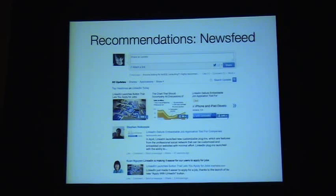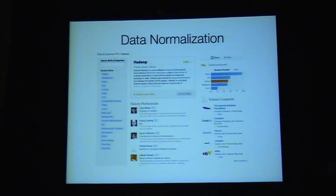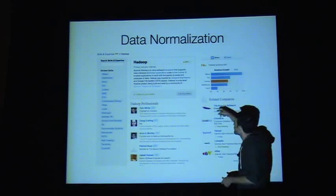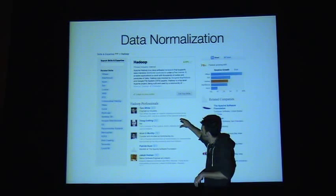Newsfeed — what are the interesting things happening in your space? And data normalization: this is a page about the skill Hadoop. We've done this process — which is very hard for a lot of content types — for skills, companies, and other data types. It goes through different phases, part machine learning and part feedback loop. The goal is to get content that captures your understanding of that space. For Hadoop we match it to Wikipedia pages and rank the top people. It's currently pure machine learning and needs some user feedback — Tom White, Arun, Doug Cutting are all pretty good results.